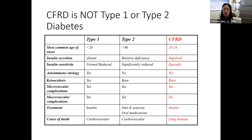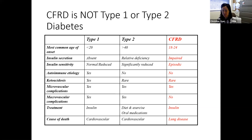The number one cause of death in patients with type 1 and type 2 diabetes is cardiovascular disease. In CF diabetes, it's lung disease. So we really need to think about treatment in the context of CF. The recommended treatment for CF-related diabetes — for that insulin deficiency — is insulin replacement.